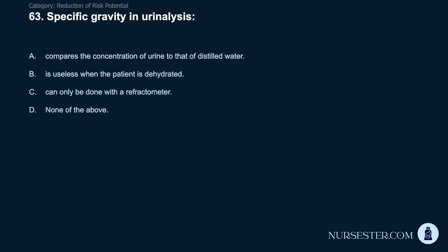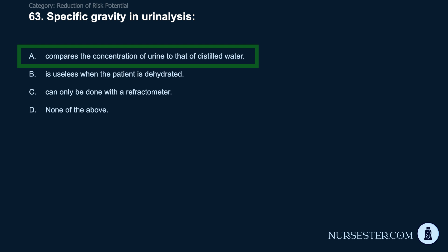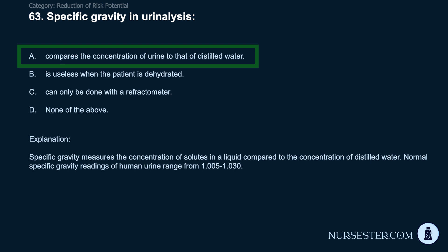Question 63: Specific gravity in urinalysis: A) Compares the concentration of urine to that of distilled water. B) Is useless when the patient is dehydrated. C) Can only be done with a refractometer. D) None of the above. Correct answer: A. Specific gravity measures the concentration of solutes in a liquid compared to distilled water. Normal specific gravity readings of human urine range from 1.005 to 1.030.